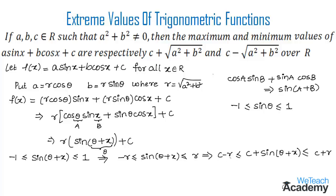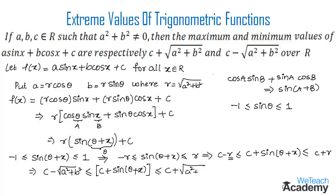We know that r equals square root of (a squared plus b squared), so replacing r gives c minus square root of (a squared plus b squared) less than or equal to f(x) less than or equal to c plus square root of (a squared plus b squared). Hence the maximum and minimum values of f over R are respectively c plus square root of (a squared plus b squared) and c minus square root of (a squared plus b squared). This concludes the basic introduction on extreme values of trigonometric functions. Hope you understood the concept — do like and subscribe to vdchacademy.com.